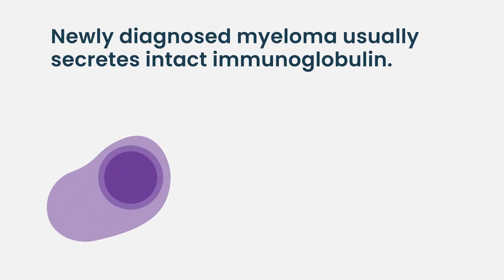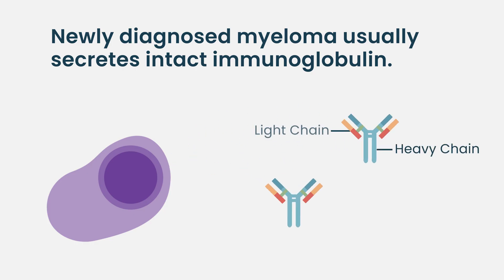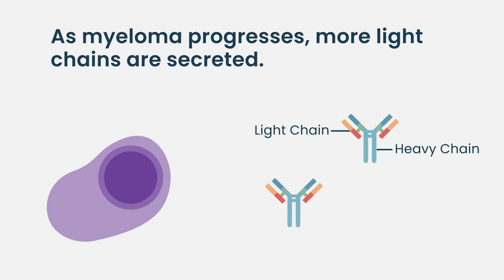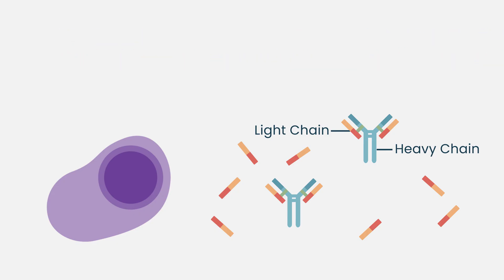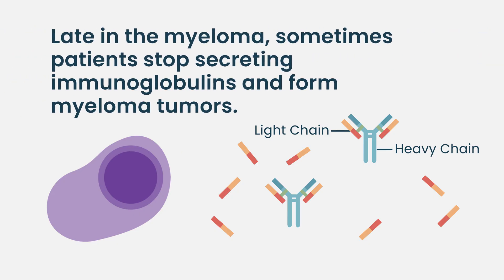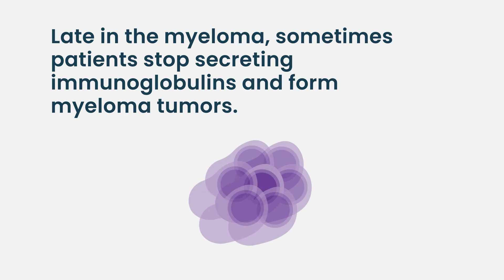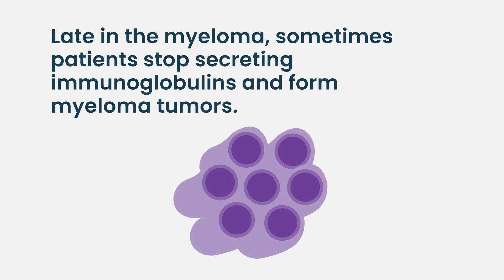Normal plasma cells secrete more or less the same amount of heavy chain and light chain — that's how you have the immunoglobulin molecule. When disease starts progressing, you start secreting more light chains, and that's how you pick up Bence-Jones protein in the urine or free light chains in the serum. As the disease becomes more aggressive, some cells stop making light chains and heavy chains, becoming lymphoma-like disease, and those patients form tumors in soft tissue or in the bones.